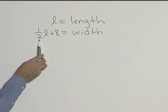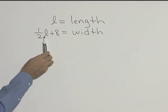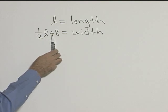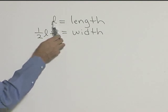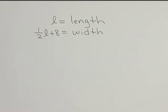It says the width is 8 feet longer than half the length. If we take half the length, that would be one half L. And then it says it's 8 feet longer. Well, 8 feet longer means add 8 to it. So this represents the dimensions of our field.